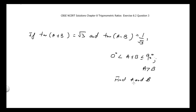We need to find the values of A and B. It is given that tan(A + B) = √3, tan(A - B) = 1/√3, A + B is between 0° and 90°, and A is greater than B.